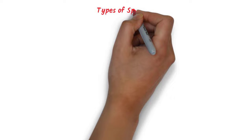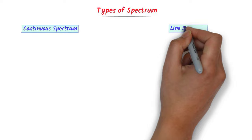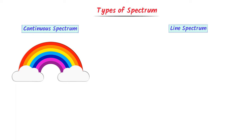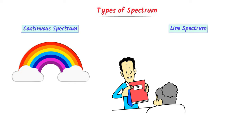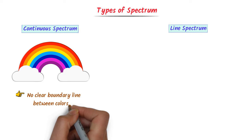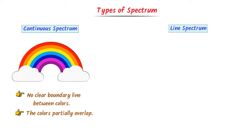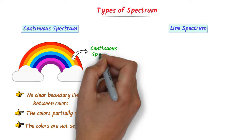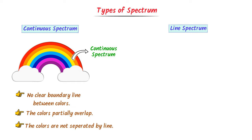There are two types of spectrum: continuous spectrum and line spectrum. For continuous spectrum, consider a rainbow. Three important points: the rainbow has no clear boundary line between colors; the colors partially overlap upon each other; and the colors are not separated by lines. Such a spectrum is called continuous spectrum because all colors are present in a continuous way. Whenever you hear 'continuous spectrum,' always think of this rainbow.